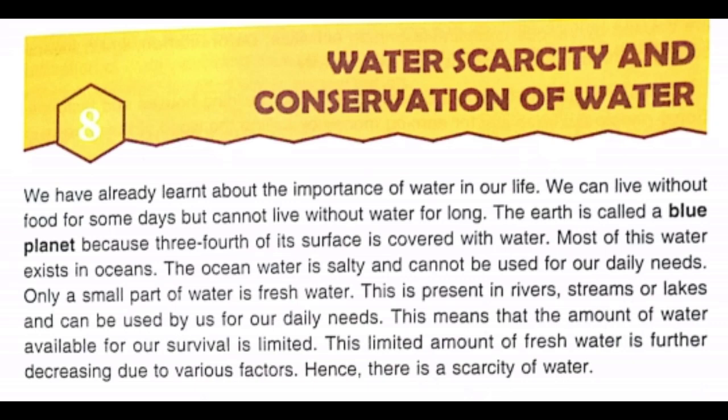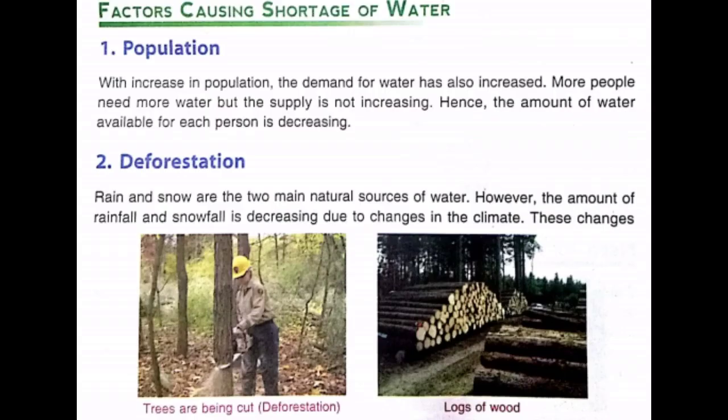The first factor is population. Population refers to how many people exist in an area. Population is increasing day by day. More people need more water but the supply is not increasing, so demand for water keeps rising.